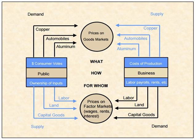Basic price is the price a seller gets after removing any taxes paid by a buyer and adding any subsidy the seller gets for selling. Producer price is the amount the producer gets from a buyer for a unit of a good or service produced as output minus any tax, and excludes any transport charges invoiced separately by the producer. Price optimization is the use of mathematical analysis by a company to determine how customers will respond to different prices for its products and services through different channels.